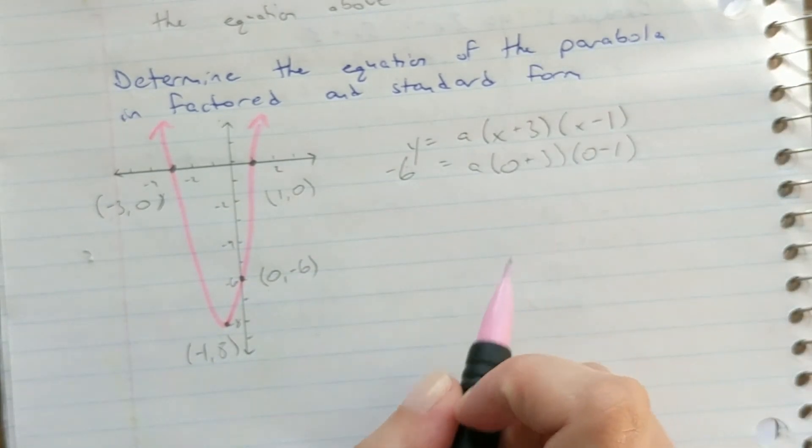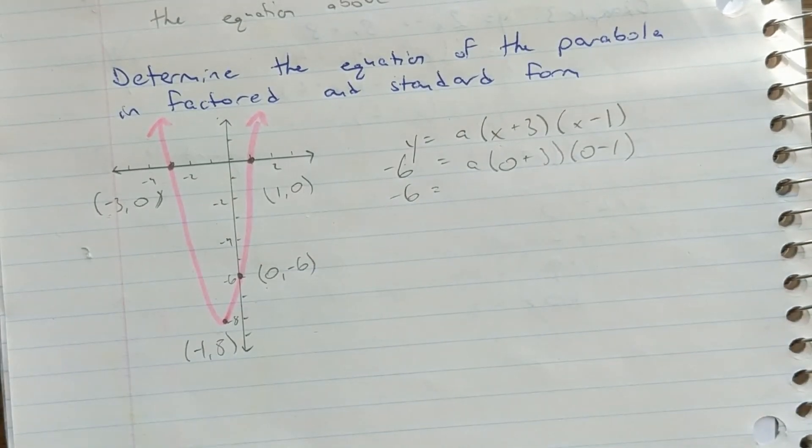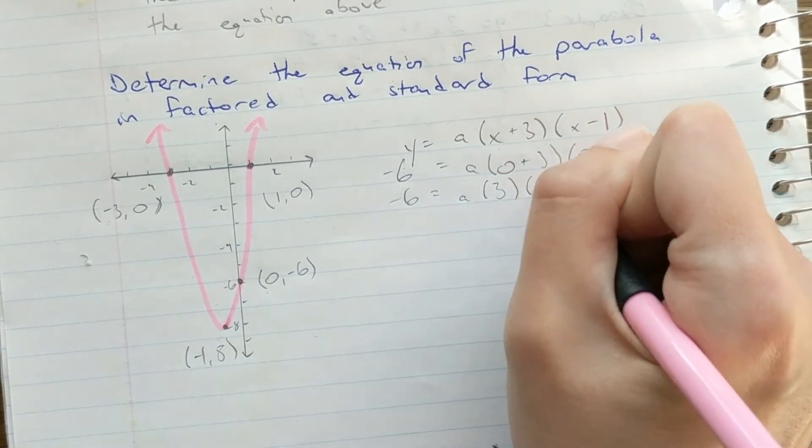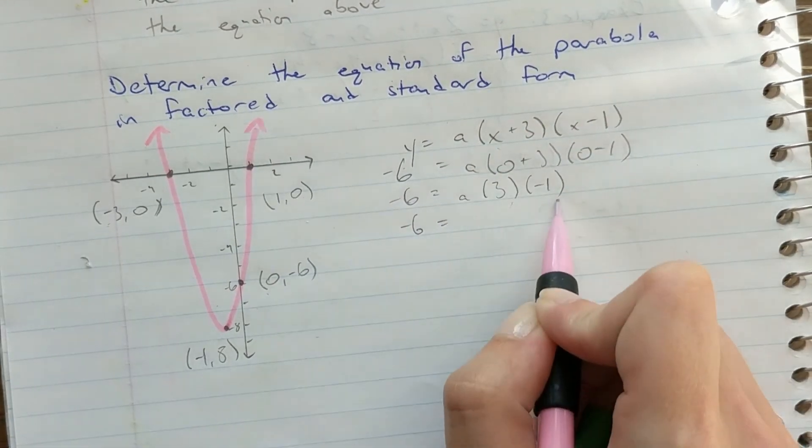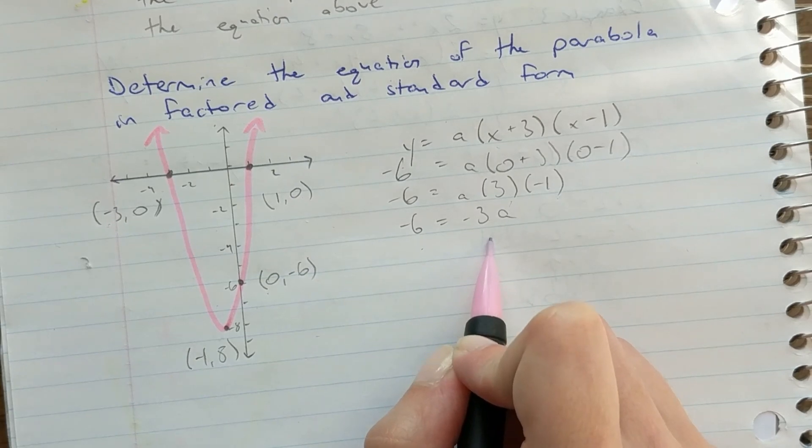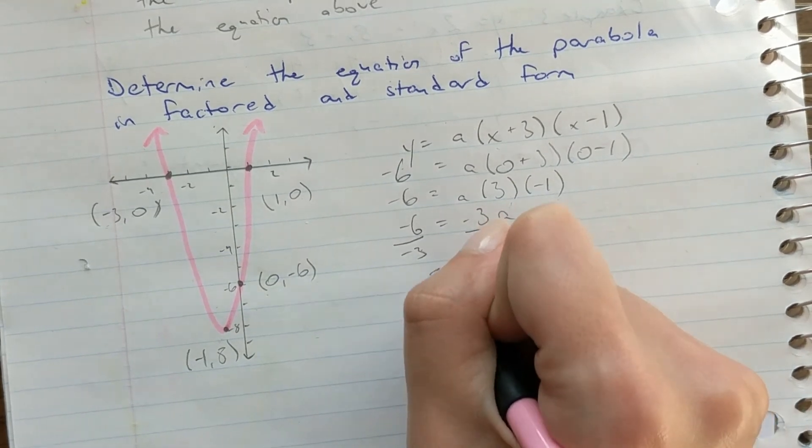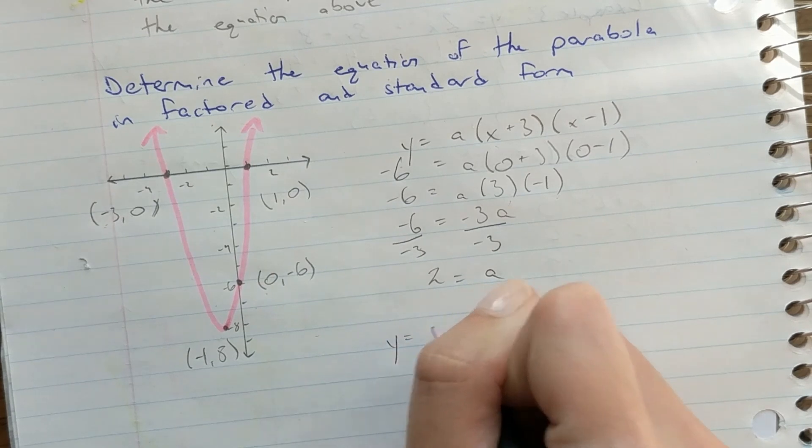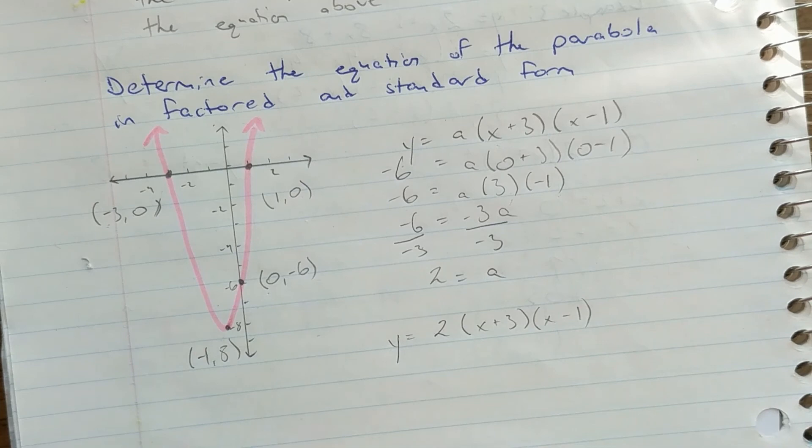I can now rearrange and solve for A. I'm going to start by simplifying what's in my brackets here. 0 plus 3 is 3. 0 minus 1 is negative 1. 3 times negative 1 is negative 3. So negative 6 is equal to negative 3A. I can divide both sides by negative 3, giving me 2 is equal to A. Therefore, my factored form of this equation is y equals 2, x plus 3, x minus 1.